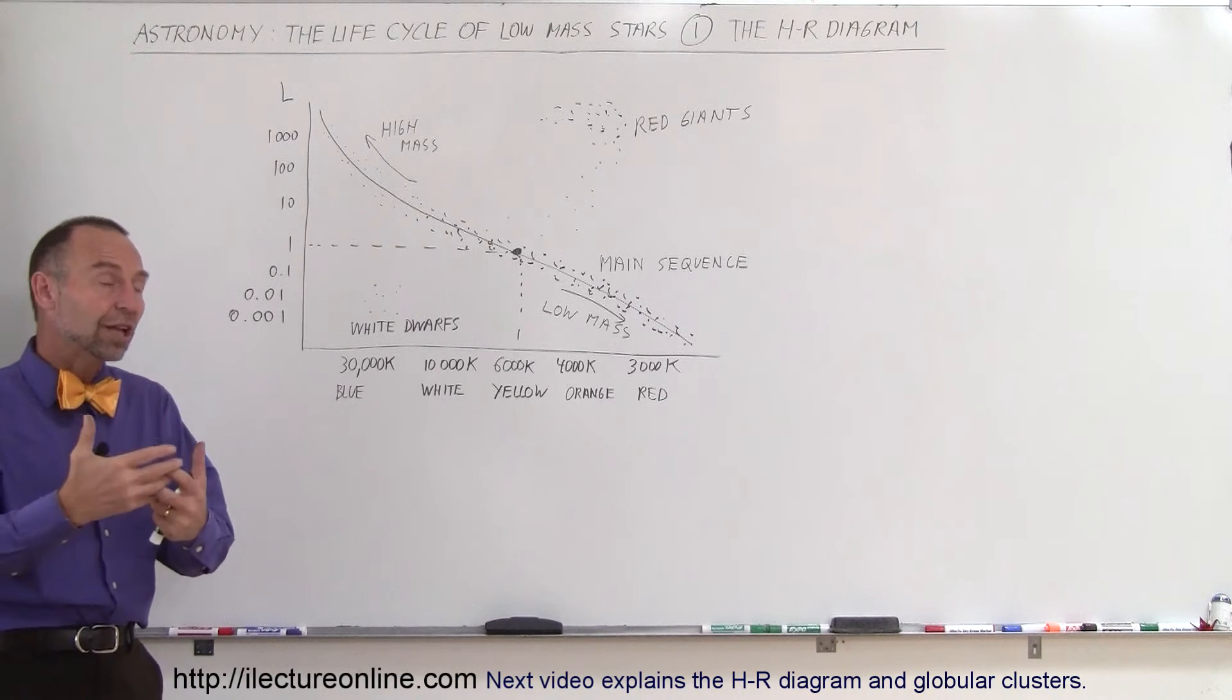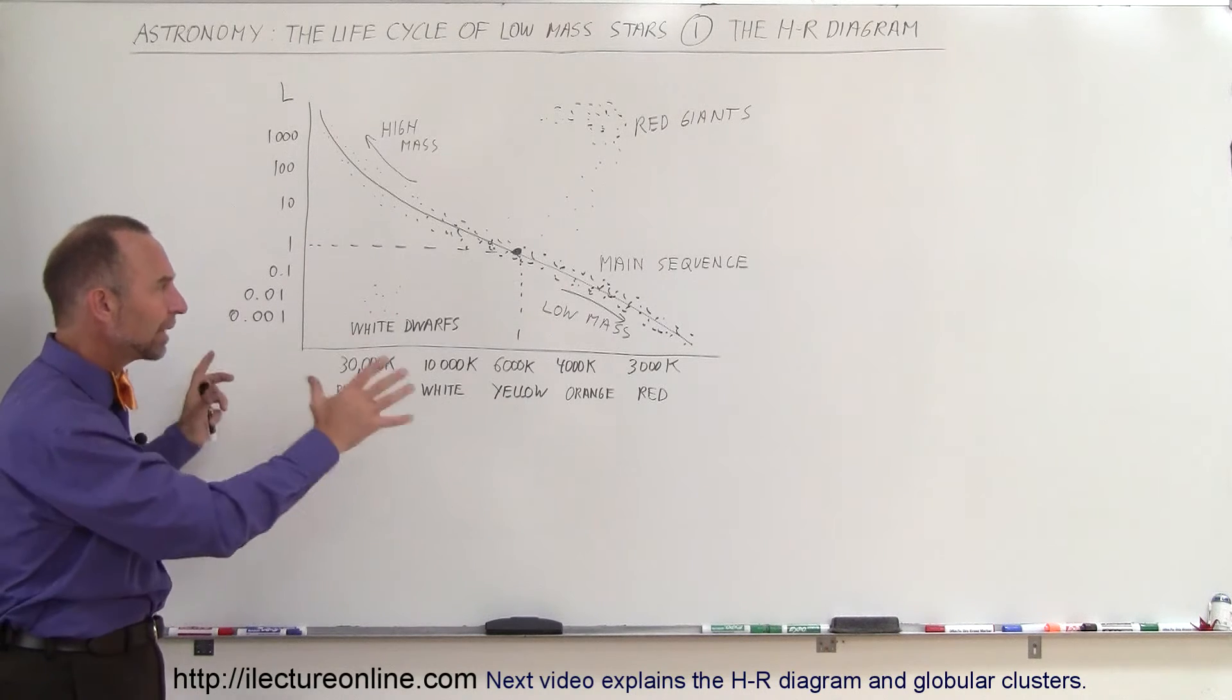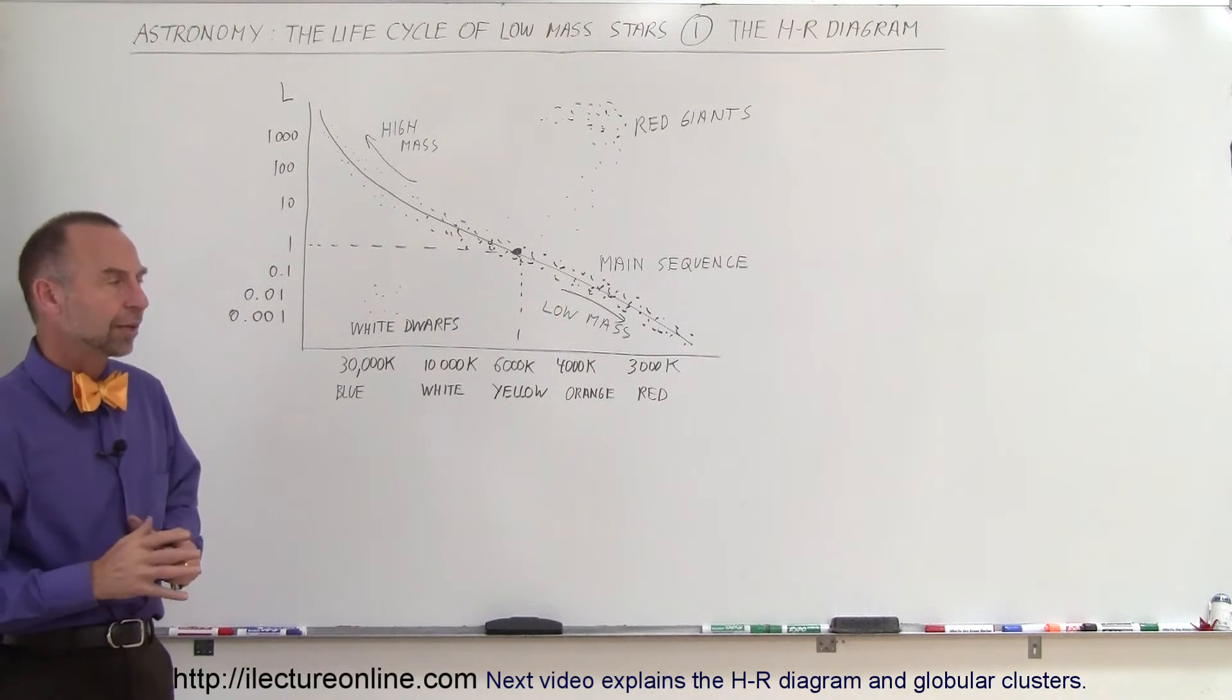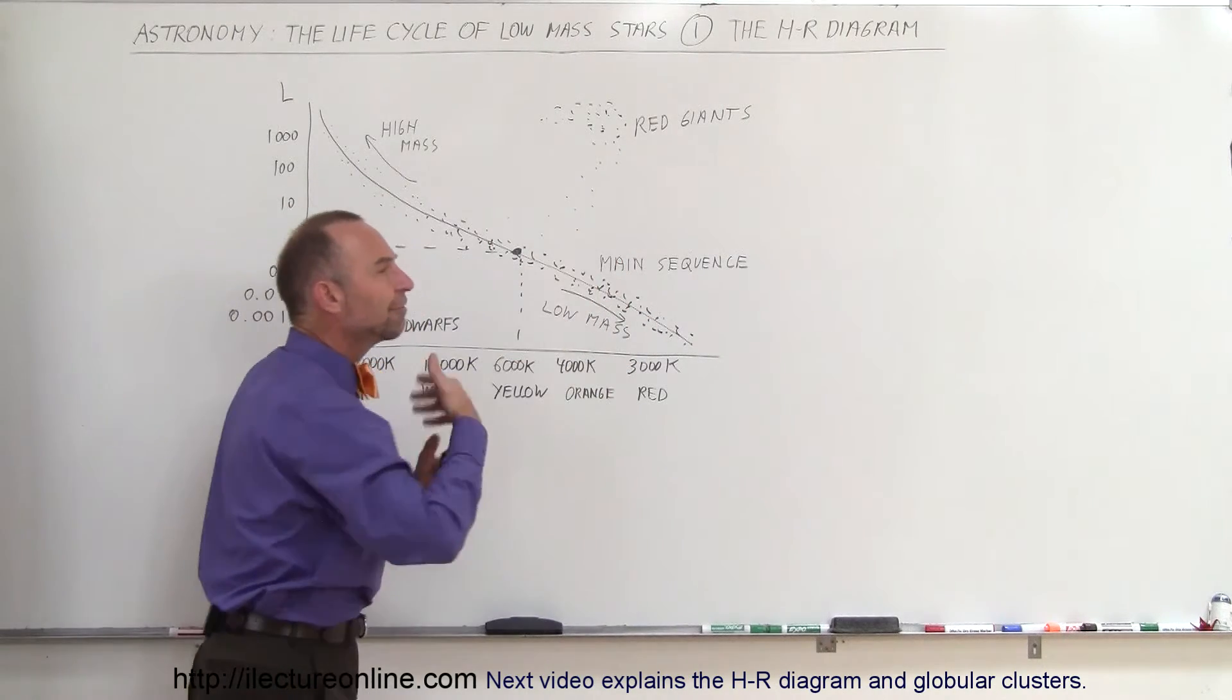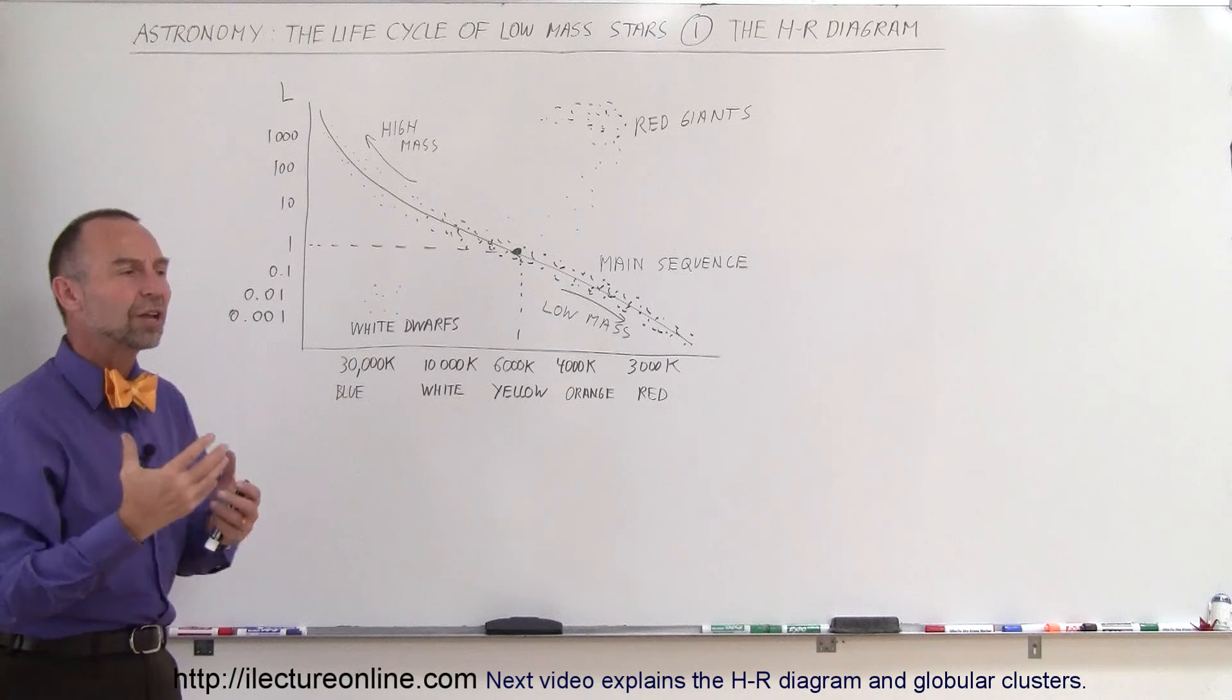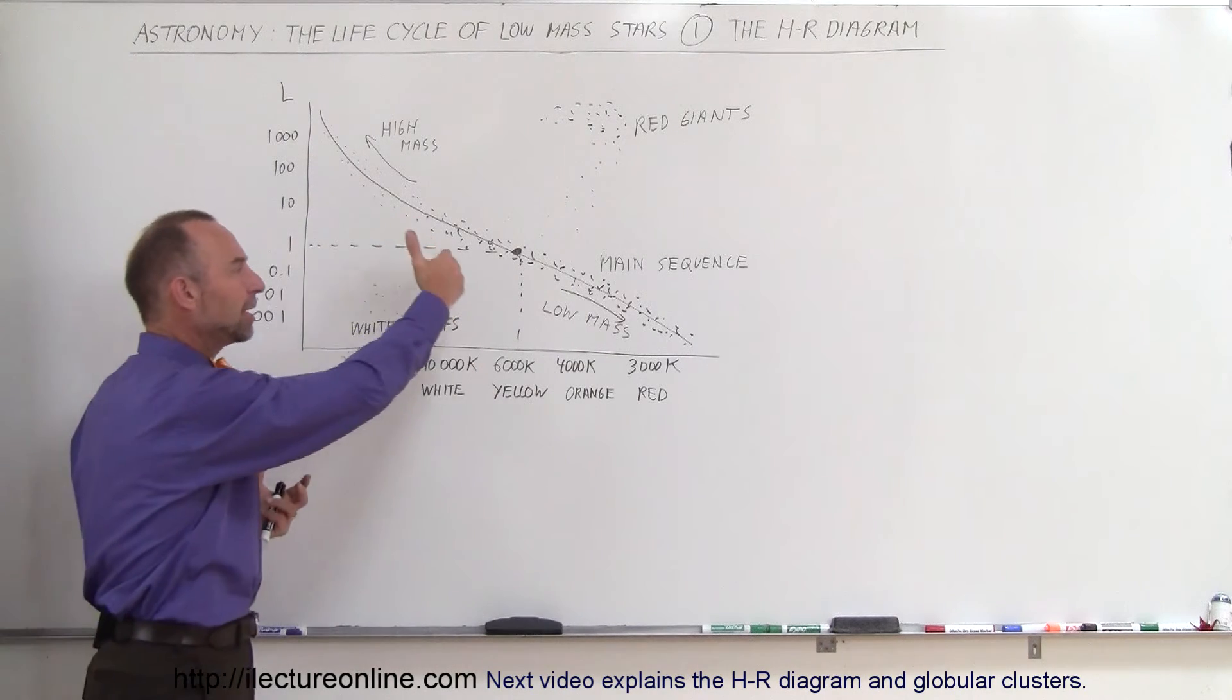But there are earlier stages to the main sequence and there are later stages of the main sequence. And by putting together the HR diagram, we began to realize that. For example, before a star becomes a main sequence star, it goes through a development stage, a protostar stage, where we go from the very beginning, how stars are formed, and finally end up on the main sequence.